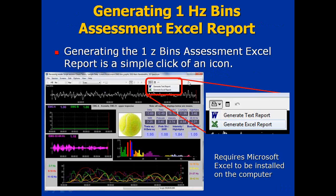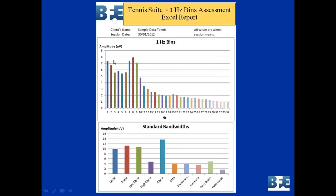Here is the 1Hz bins assessment Excel report. At the top you have the client's name and time, then two graphs: one is the 1Hz bins showing the amplitude for each individual 1Hz bin from 1 to 34Hz, and lower down you have the standard bandwidth amplitudes for each standard band from that three-minute eyes-open recording. You can look at this data, see if it looks normal, check for any anomalies, take note, and then move on to training. Alternatively, if you choose to do this before and after a training session, you can see the differences. It's three minutes long and pretty quick.